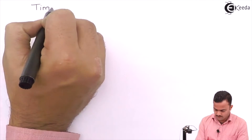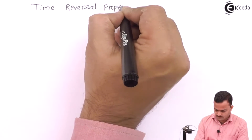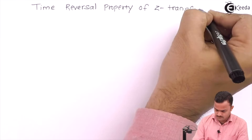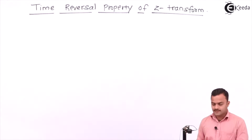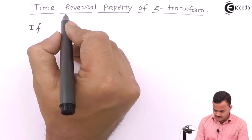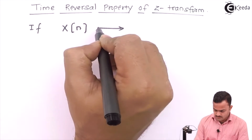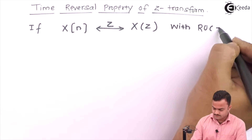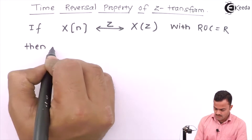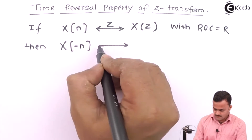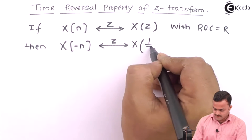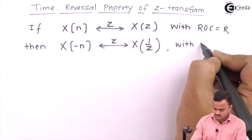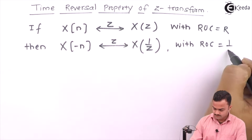Hi friends, in this video we are going to see the time reversal property of Z transform. It says if x of n has Z transform X of z with region of convergence R, then x of minus n has Z transform X of 1 by z, and the ROC is 1 by R.